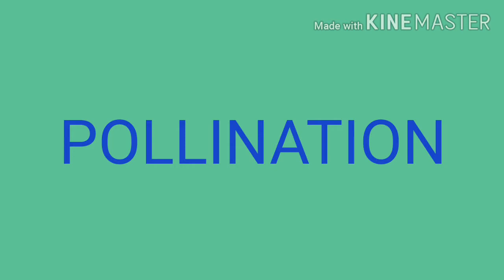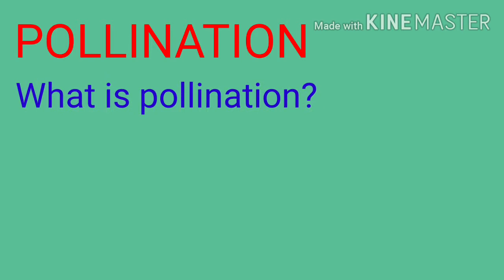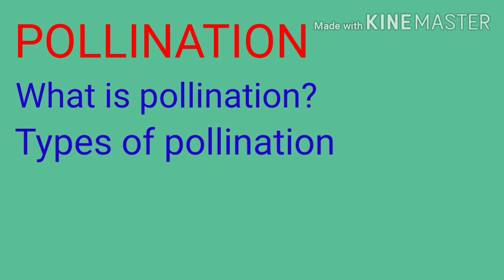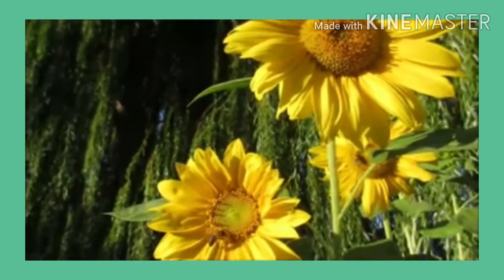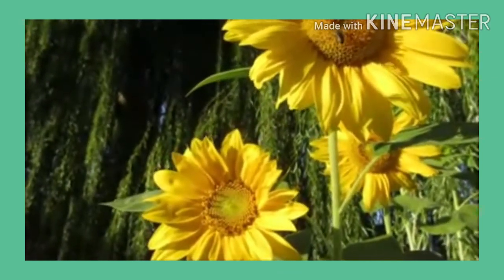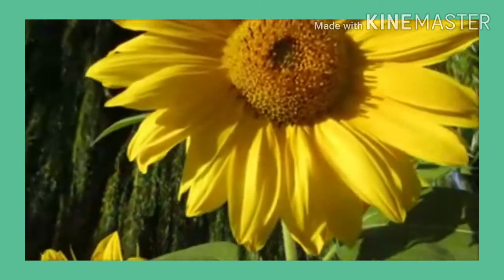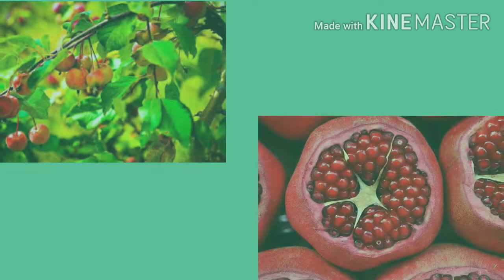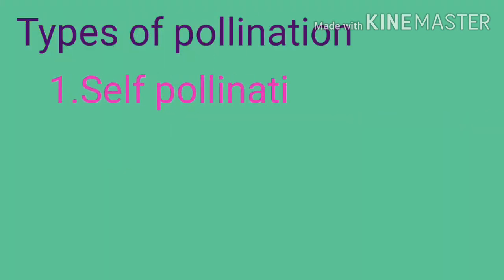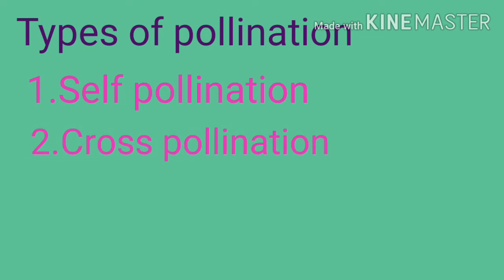In this video we are going to learn about pollination — what is pollination and types of pollination. Transfer of pollen grains from anther to stigma is called pollination. Pollination is an important and first event in the development of the fruit and the seed. Pollination is of two types: self-pollination and cross-pollination.